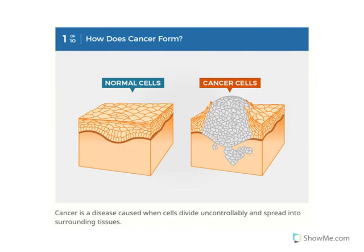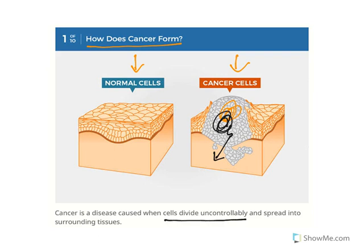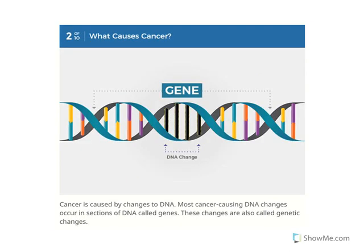In a stepwise process: normal cells are present, then a cancerous cell begins to grow. The cells continue to multiply and spread to adjacent cells. When cells divide uncontrollably and spread into surrounding tissues, it causes cancer. This uncontrolled spread — invasion — is what attacks adjacent cells and is responsible for human death.